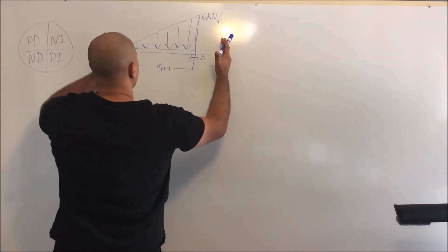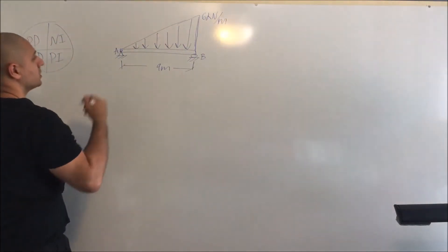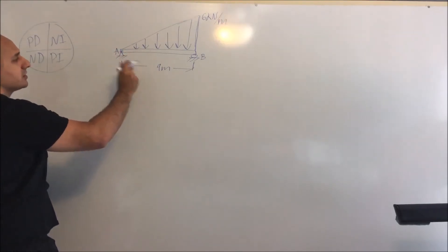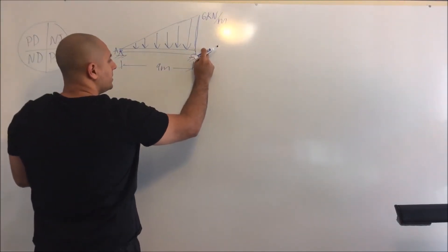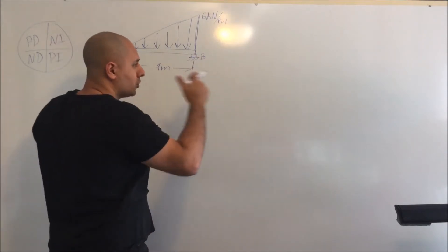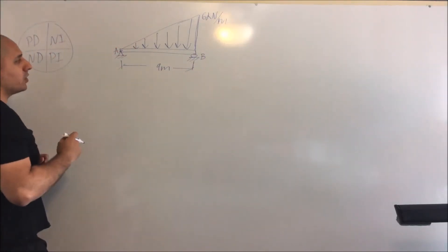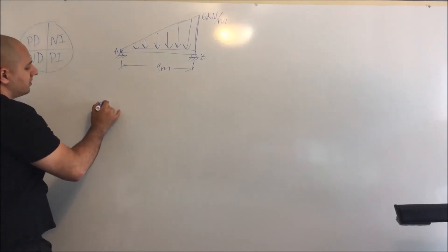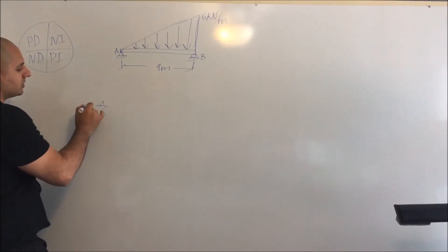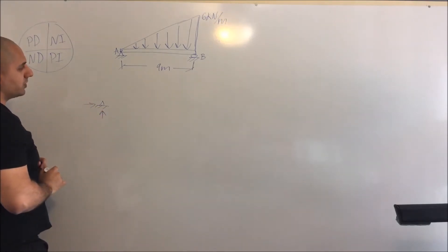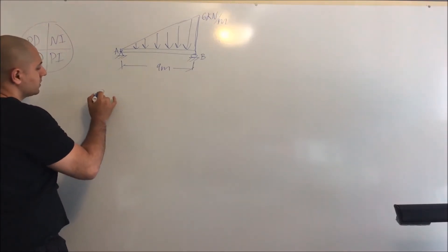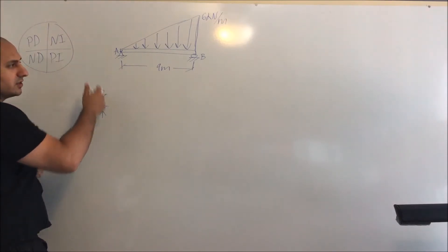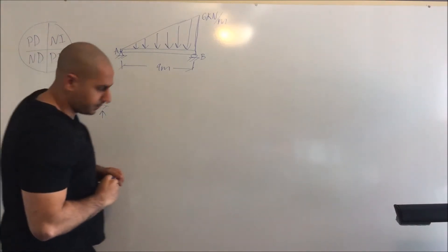When you look at a problem like this, the first thing you need to look at is the type of connections. Here at point A I have a pin connection, and at point B I have a roller connection. Going back to statics 101, a pin connection can have reaction forces in the y-direction or x-direction, whereas a roller connection has just a force acting in the y-direction.